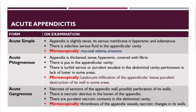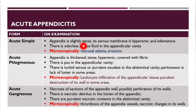According to morphology, there are three types. In acute simple appendicitis, the appendix is slightly tense, the serous membrane is hyperemic and edematous, and there is odorless serous fluid inside — macroscopically. Microscopically, there is mucosal edema and sometimes erosions.